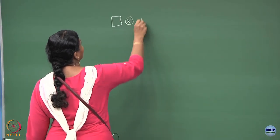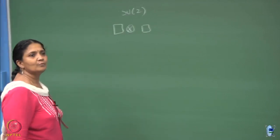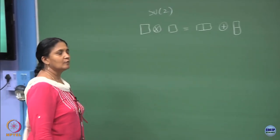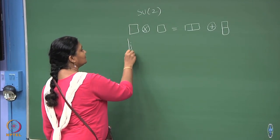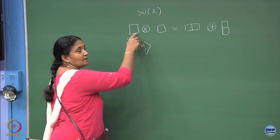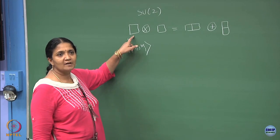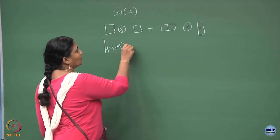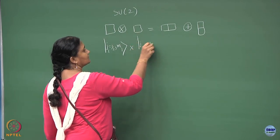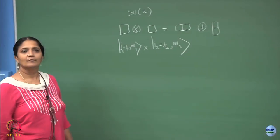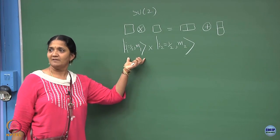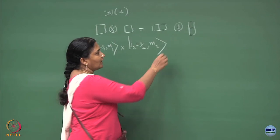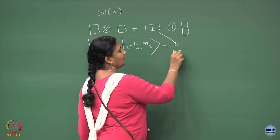Let me do only SU(2). You understand what this means — the state for this can be written as j₁ equal to half, m₁ can be anything; that is the state which belongs to this two-dimensional representation, m₁ could be plus or minus j₁. And then you take a product with j₂ which is half and m₂. You are taking a tensor product of two primary bases and want to find out the corresponding j equal to what.